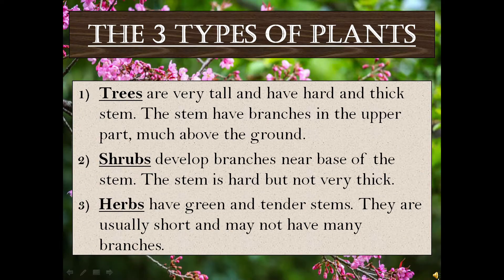There are three types of plants: trees, shrubs, and herbs. First, trees. Trees are very tall and have a hard and thick stem. The stem has branches in the upper part, much above the ground.